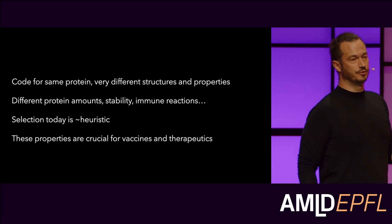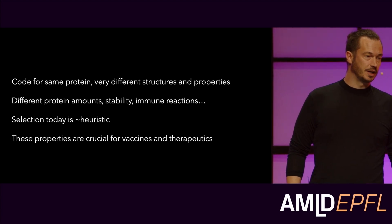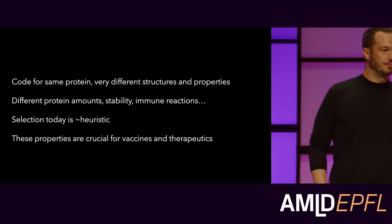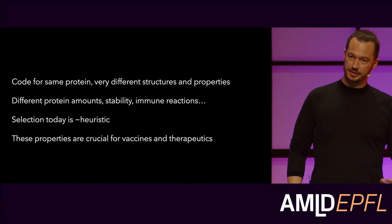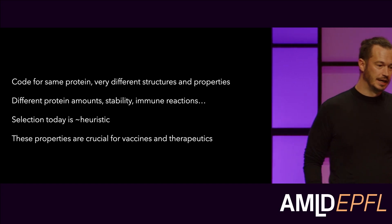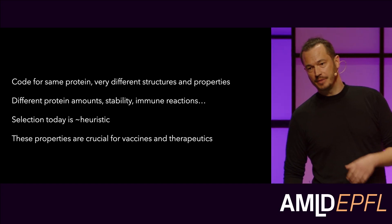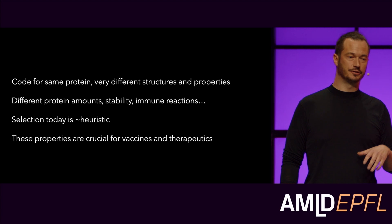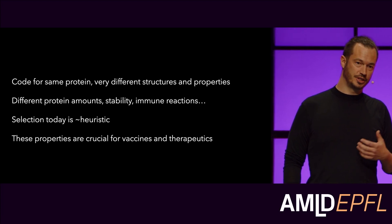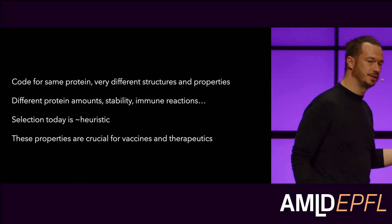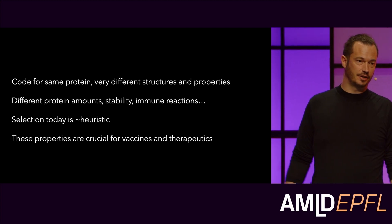They code for the same protein but have very different structures, and as a result, very different properties. They produce very different amounts of that protein. The stability of the mRNA molecules themselves is very different — the time it takes for these mRNAs to degrade in solution or inside our cells is completely different depending on which of these 10 to the 630th you happen to choose. The immune reactions they provoke — unwanted or wanted — are also very different. Our best-known methods for choosing which of these variants to use are pretty close to heuristic.